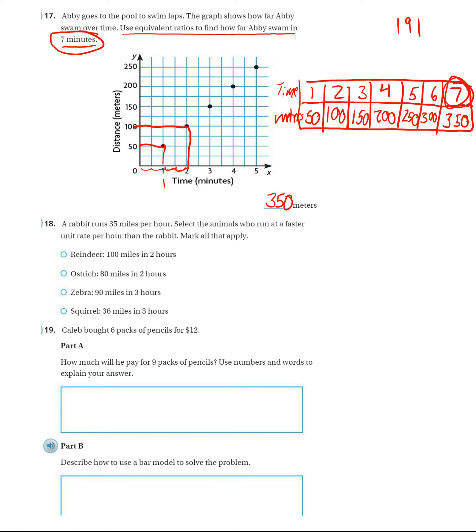All right. Number 18. A rabbit runs 35 miles per hour. That word per tells us we're dealing with a unit rate. Select the animals who run at a faster unit rate per hour than the rabbit.